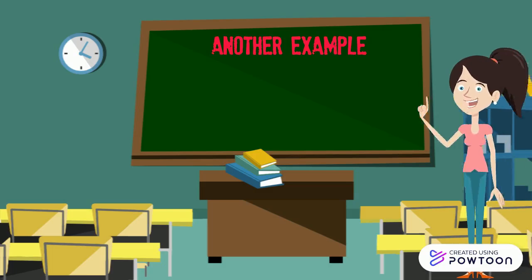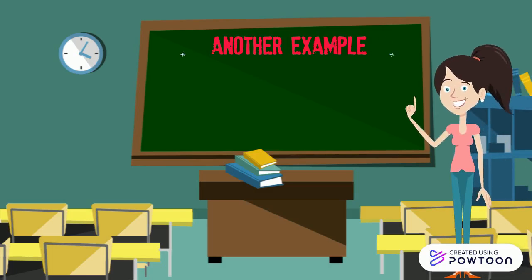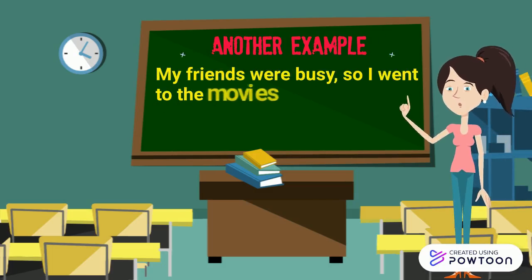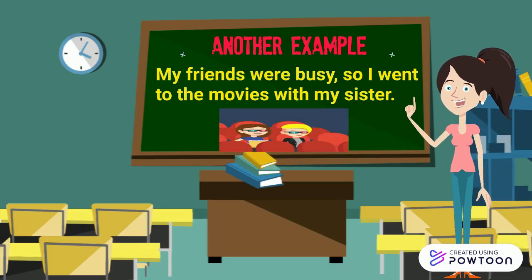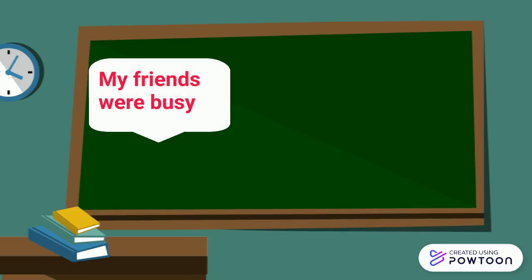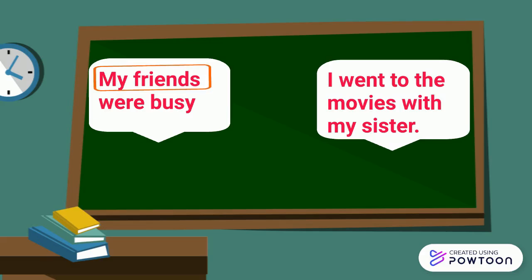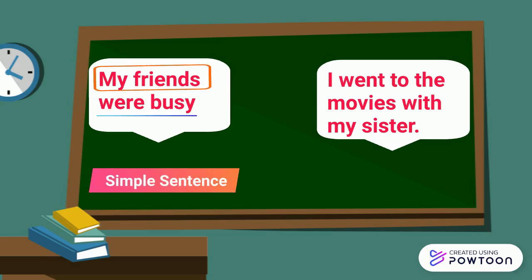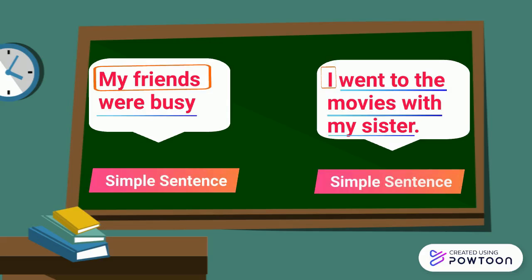Here's another example: "My friends were busy, so I went to the movies with my sister." Let's break it down. Subject and predicate — that's one simple sentence. Plus subject and predicate — that's another simple sentence. Joined by a comma and a conjunction, so, they form a compound sentence.